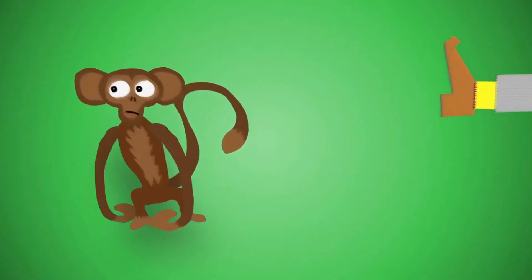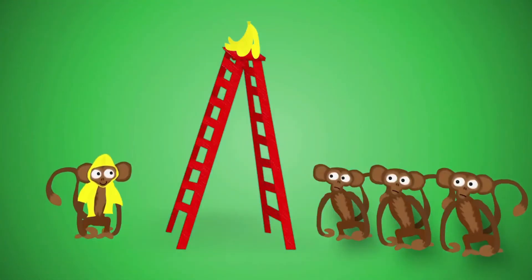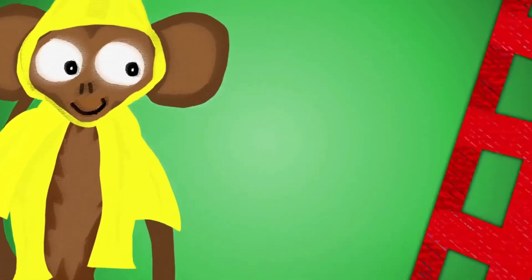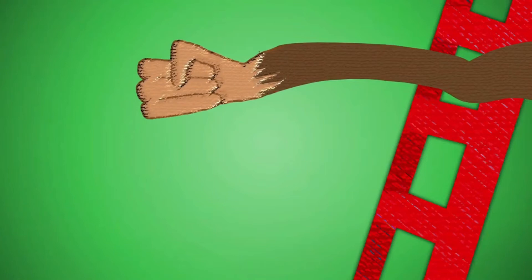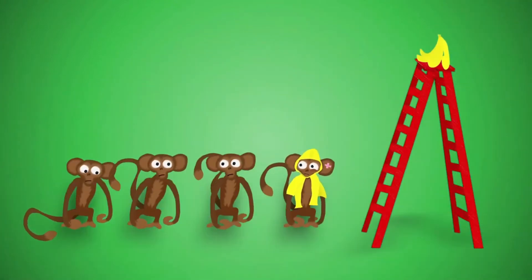But then one of the monkeys was replaced with a new monkey wearing a raincoat. Naturally, this new monkey felt the temptation to go up for the banana, but he was customarily attacked and prevented from doing so. The new monkey also learned not to climb the ladder.